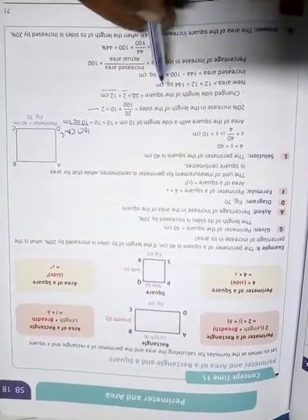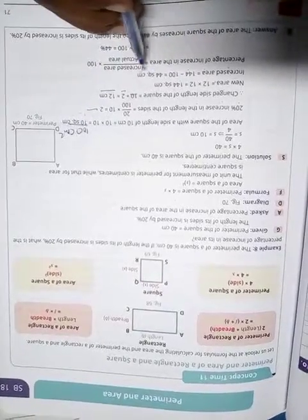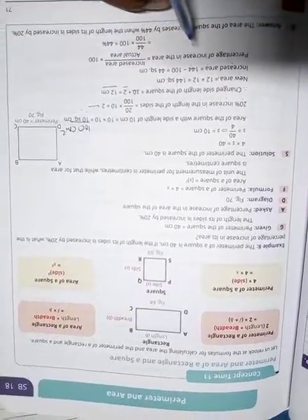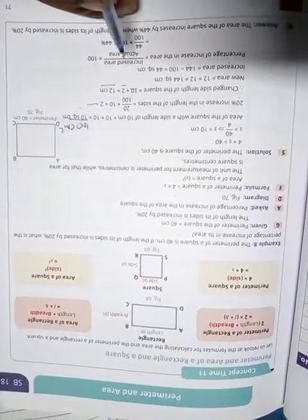The increase in area is 144 − 100 = 44 cm². To find the percentage increase: (44/100) × 100% = 44%. Therefore, the percent increase in area is 44%.